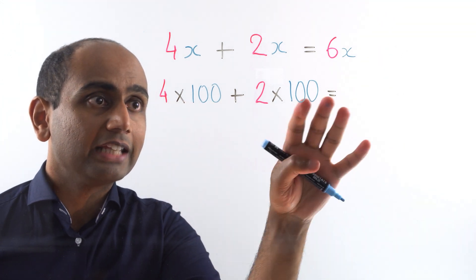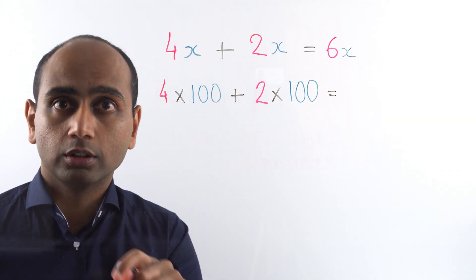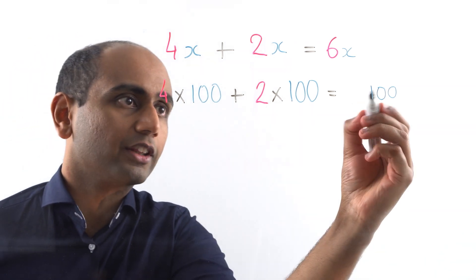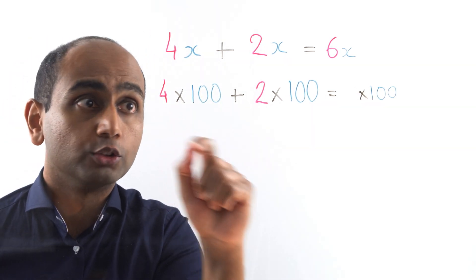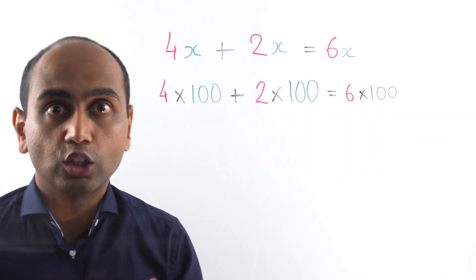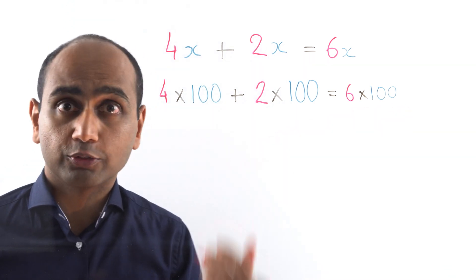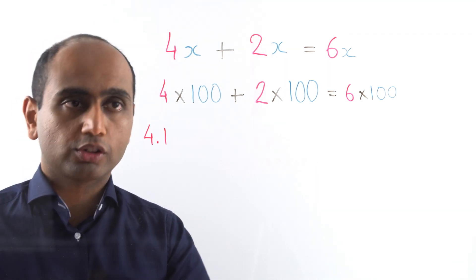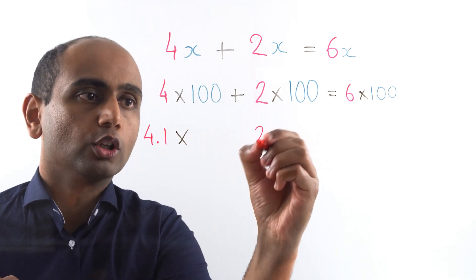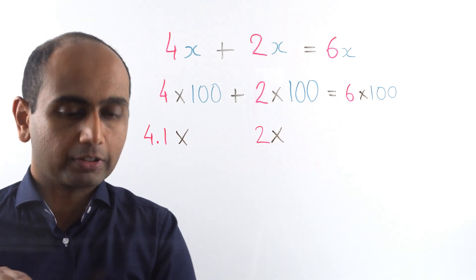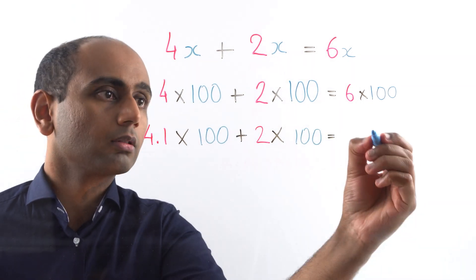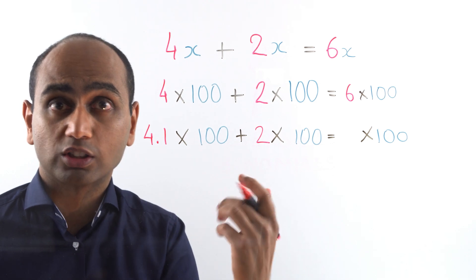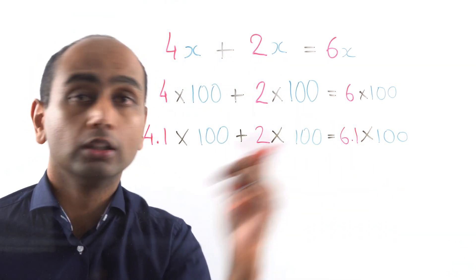We can think of that in the same way for this next one. If I've got 4 lots of 100 plus 2 lots of 100, how many lots of 100 do I have altogether? Well 4 lots of 100 plus 2 lots of 100 is 6 lots of 100. Now how would this change if I had 4.1 lots of 100 and 2 lots of 100 being added together? Well 4.1 plus 2 lots of 100 would be 6.1 lots of 100.